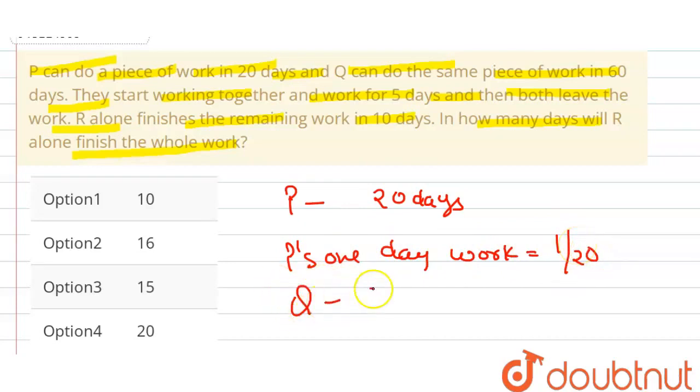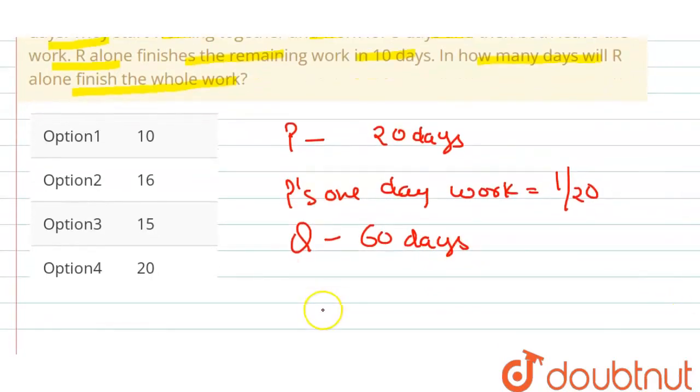Q, उसी काम को कितने दिन में complete करता है? 60 days में. So, Q का one day work कितना होगा? So, Q's one day work. यह कितना होगा हमारा? यह value आएगी हमारी 1 by 60 के equal, right?